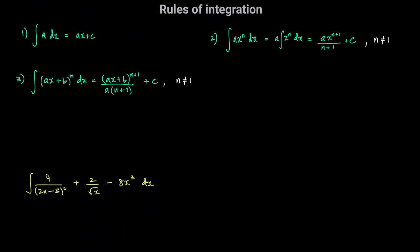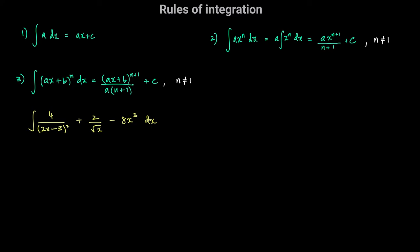The last rule is that if we take the integral of a sum or difference of terms, that is simply the sum or difference of the integrals of each individual term. For example, given an expression with a sum or difference of three different terms in x, we can integrate each individual term and combine them. Writing everything in the numerator: we have 4 divided by 2x minus 3 squared, which is 4 times 2x minus 3 to the power of negative 2; plus 2 divided by the square root of x, which is 2x to the power of negative 1 half; minus 8x cubed. We integrate this with respect to x by integrating each term individually.